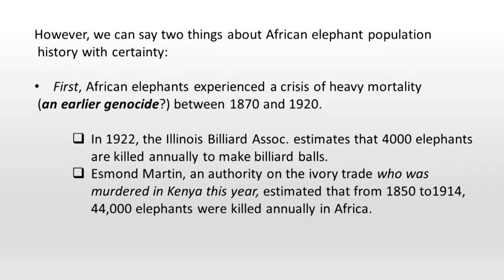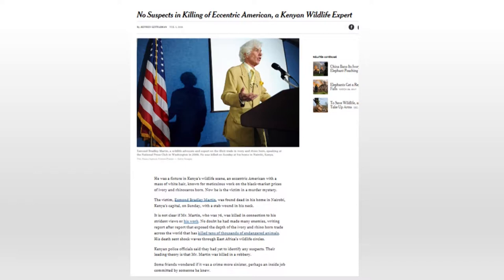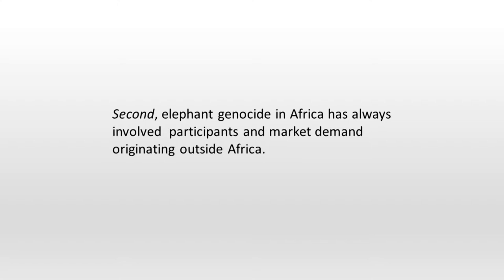Esmond Martin, who lived for many years in Kenya, was recently murdered under circumstances that have never been explained — only a couple of months ago. Here he is: "No suspects in killing of an eccentric American." He played a very important part in publicizing the scale of recent elephant mortality and the history of elephant genocide in Africa, and one wonders if that had something to do with his murder. The second point that can be made with certainty about elephant population history: during these periods of elephant genocide, outsiders — non-Africans — have played a crucial role, both as participants primarily as traders, and as foreign countries acting as markets providing demand for ivory.